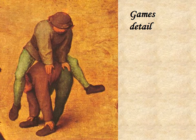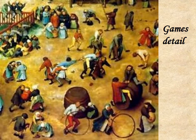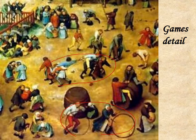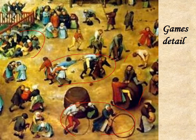Here's a detail from Children's Games: the children playing leapfrog. Here you can see them rolling hula hoops, having a bit of a chicken fight, ring around the rosie, riding a little barrel — doing all kinds of things, engaging in all kinds of games, many of which are even familiar to us today.